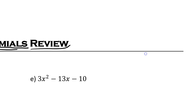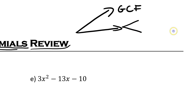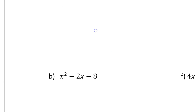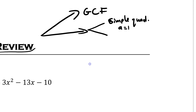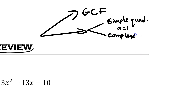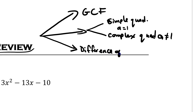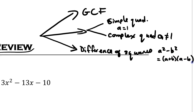Just to remind ourselves of the different ways of factoring: we can factor out the greatest common factor, the GCF. We have two kinds of quadratics — simple quadratics, where a equals 1 (a being the coefficient in front of the squared term), and complex quadratics, where a does not equal 1. The last type we'll be dealing with today is difference of squares: a squared minus b squared equals (a + b)(a − b).